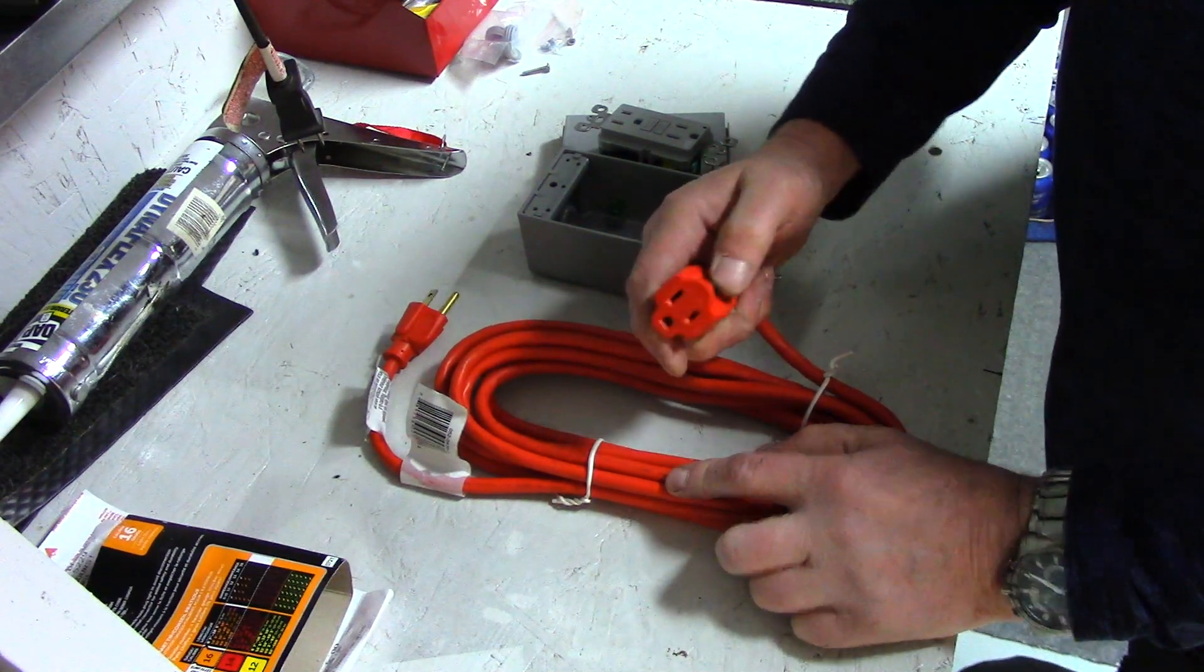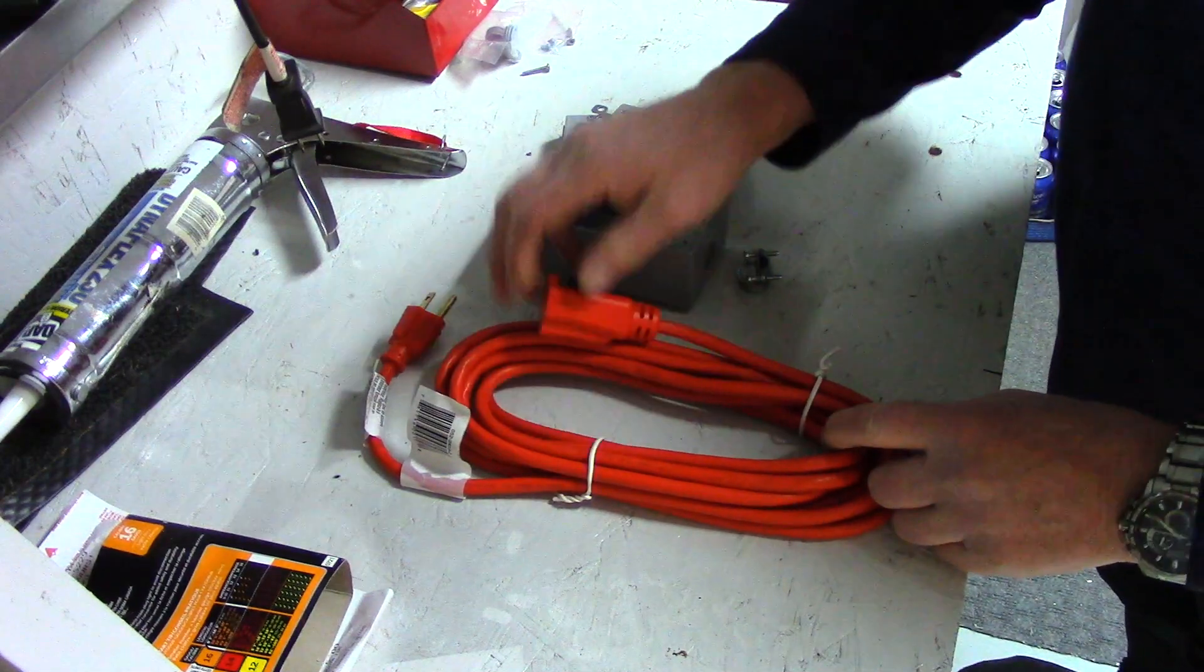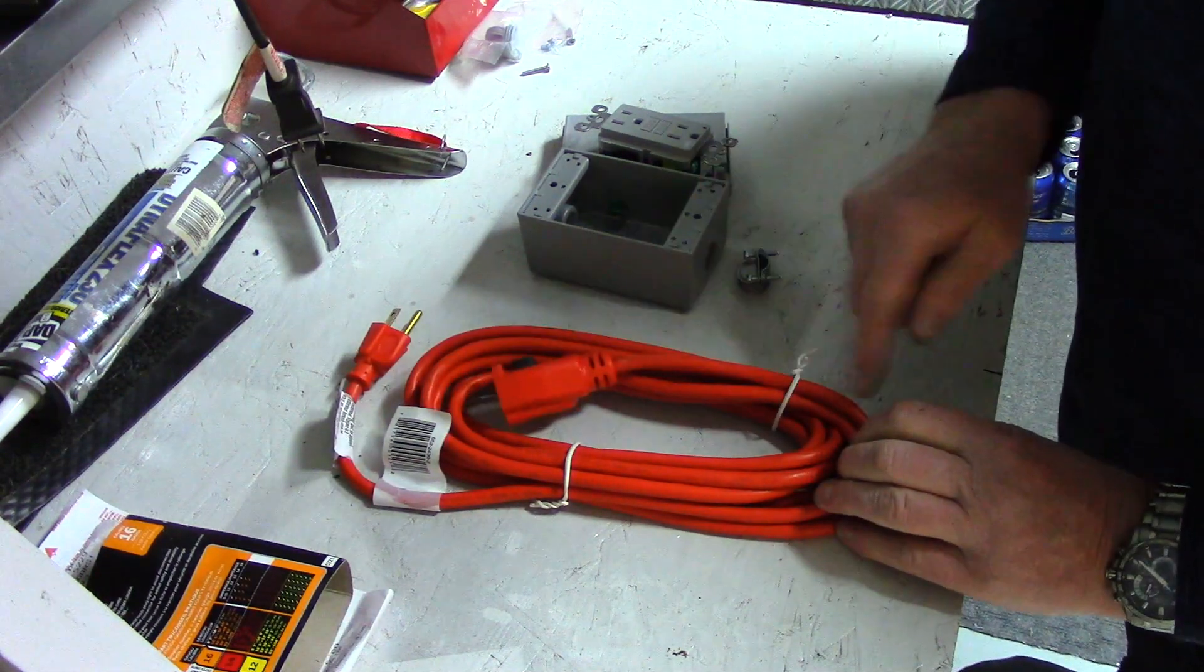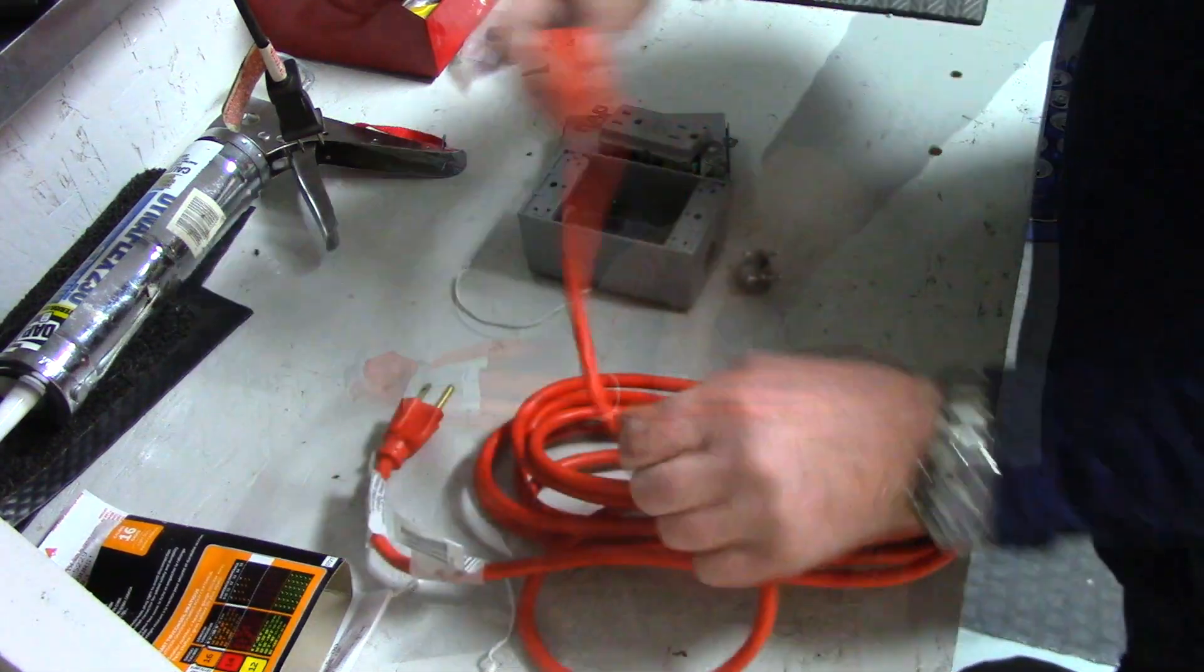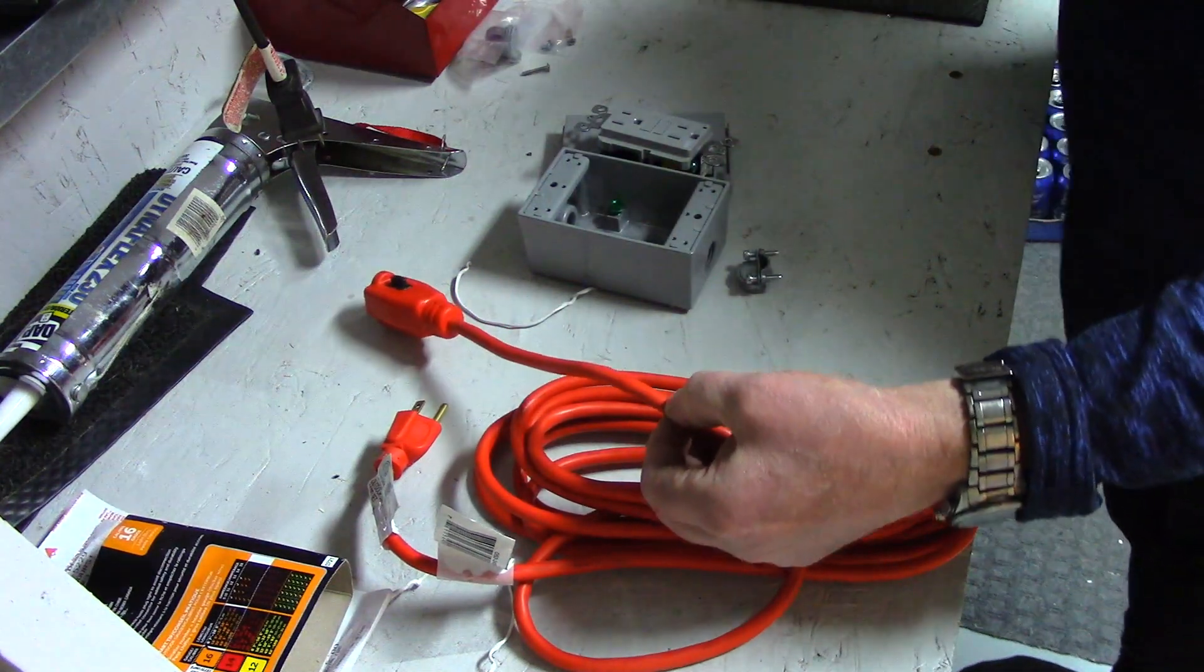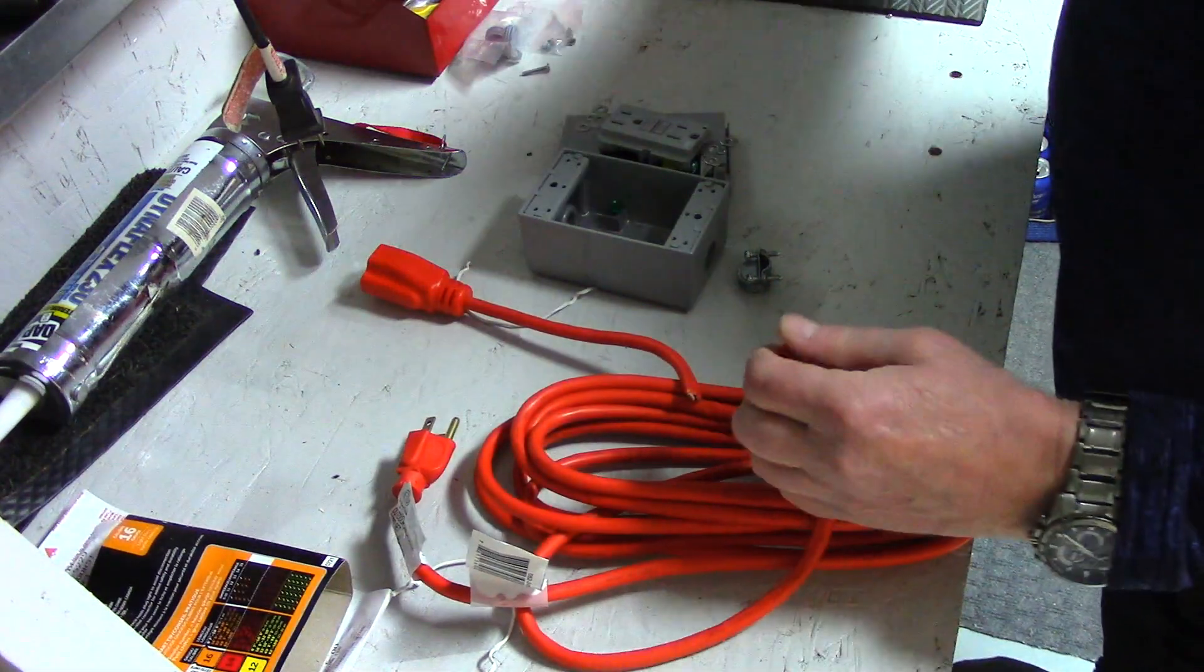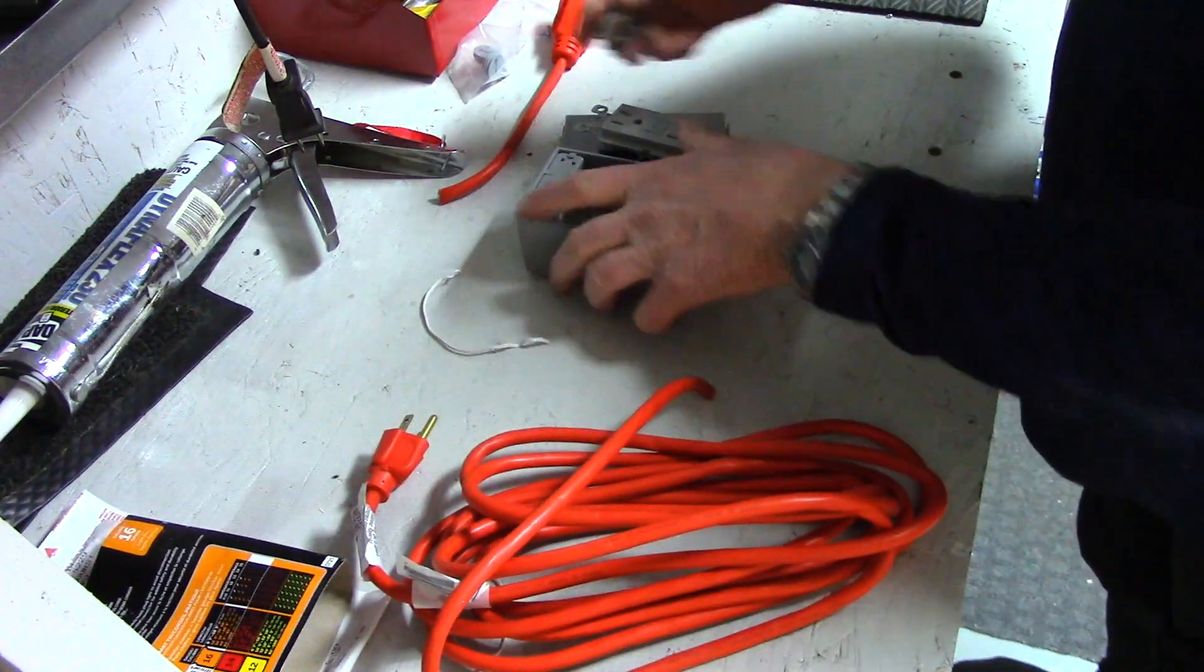So we're going to be cutting that end off. Don't cut it too short because we might be able to use it on something else, so I'm going to leave a lot of cable on it. Let's get to it. I'm going to cut this off right here. Seems a shame to cut a new cord, but we are making this for the wet tile saw.